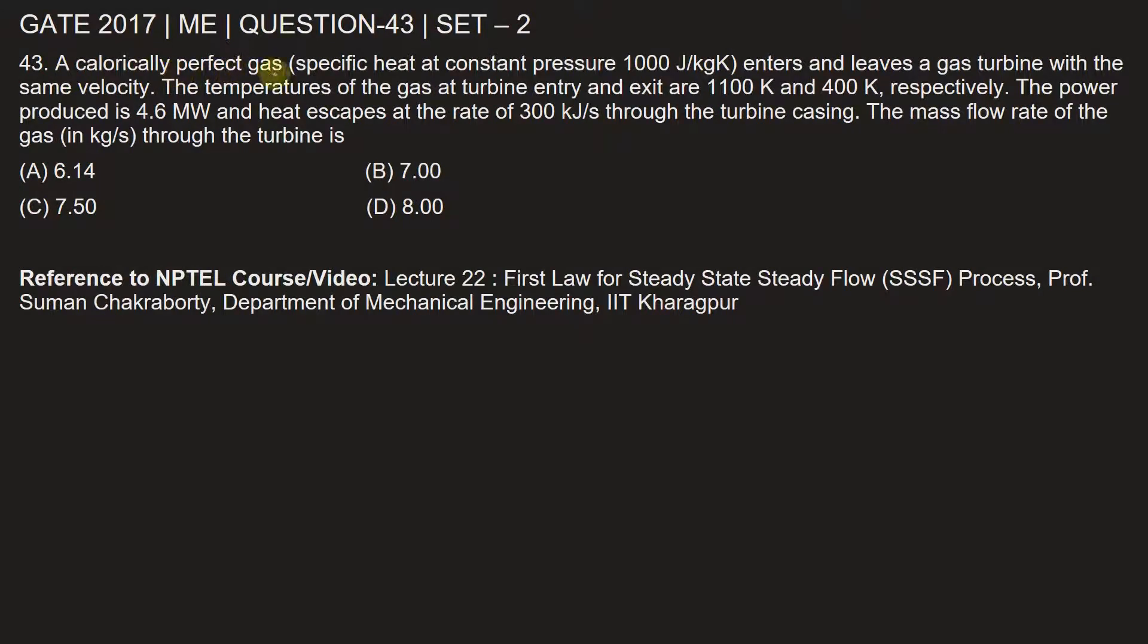A calorically perfect gas, specific heat at constant pressure is 1000 Joule per kilogram Kelvin, enters and leaves a gas turbine with the same velocity.